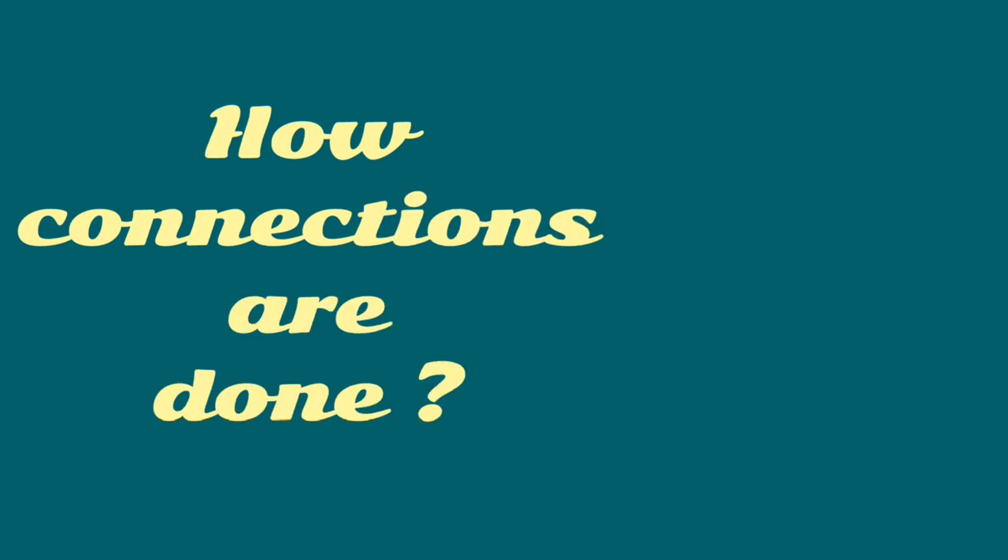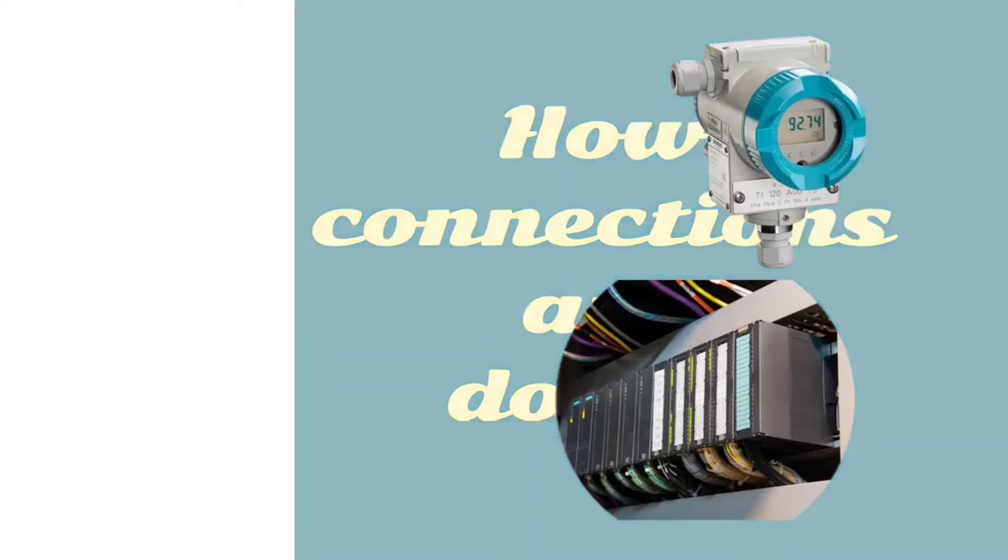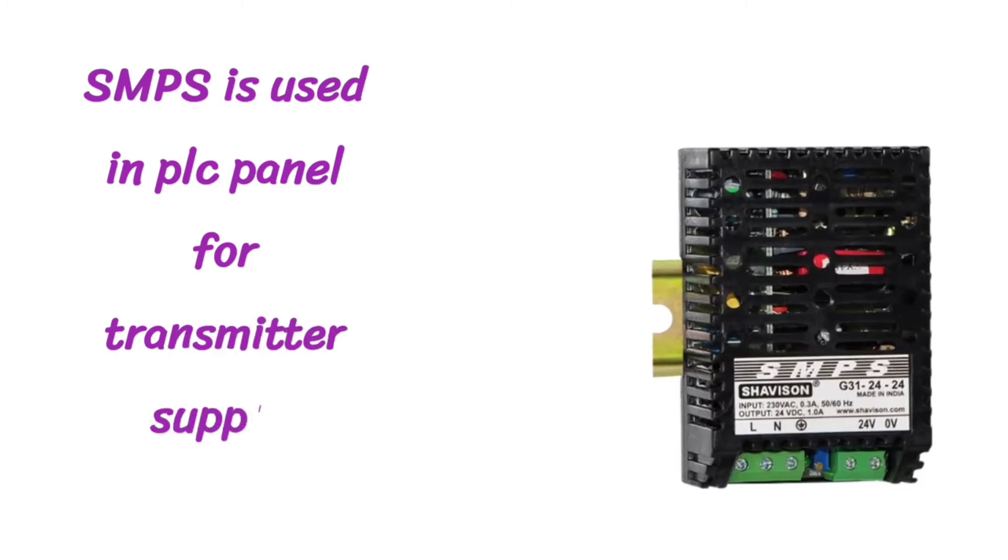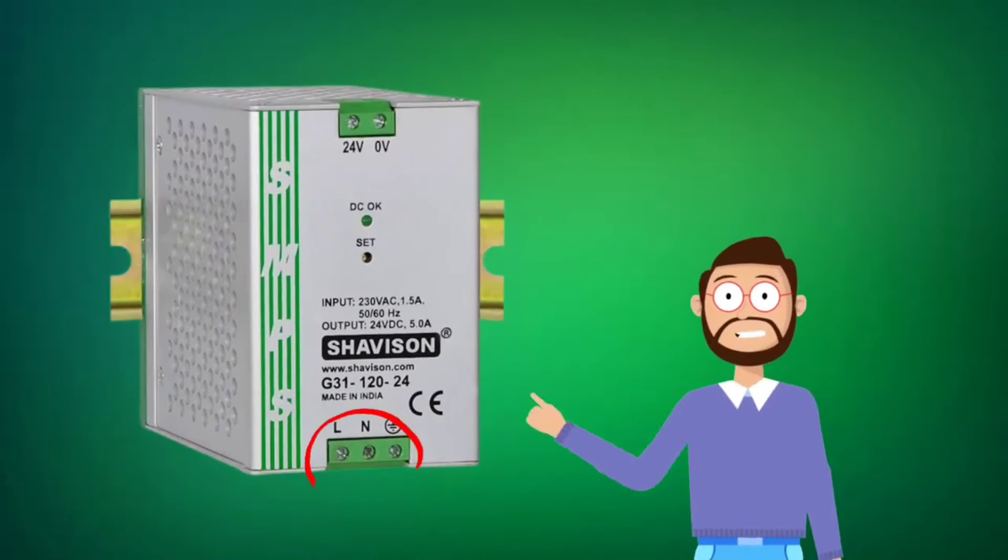How are the connections of any transmitter made to the PLC? Usually, SMPS is used in PLC panel to provide 24V DC supply. 220V AC supply is given to SMPS and it converts it into 24V DC supply.